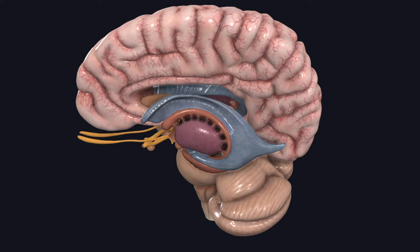In this video, we are going to study about the lateral ventricles. There are two lateral ventricles — one in each cerebral hemisphere.